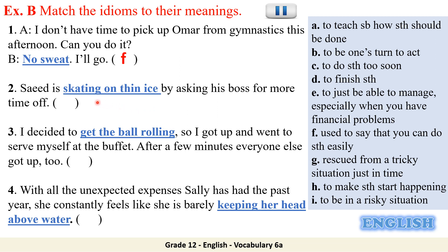'To skate on thin ice' — we don't really have skating or any ice, so it is an idiom with a different meaning from considering each word on its own. To skate on thin ice means to be in a risky or dangerous situation. 'To get the ball rolling' means to make something start happening.